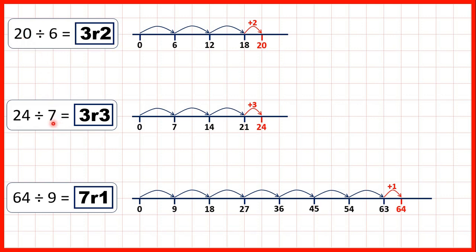For the next question, we needed to think of a number in the 7 times table that's as close to 24 as possible but not more than 24. That's 21, and 3 times 7 is 21, so we write a 3 before the remainder. But 3 times 7 is 21, and we need to count on 3 to get to 24 — so that's why our remainder is 3.